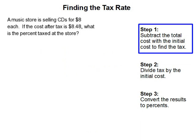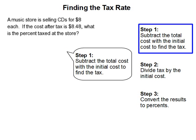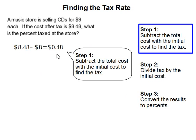Step 1: subtract the initial cost from the total cost to find the tax. To find how much the person pays for tax, we take the total cost, which is $8.48, and subtract the initial cost, which is $8, so our tax is $0.48.